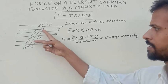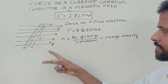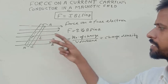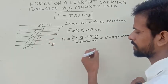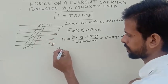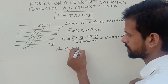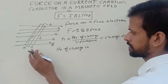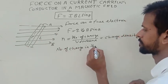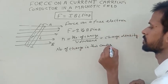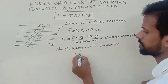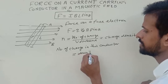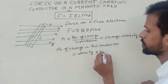If N is the charge density, then what will be the number of electrons, number of charge in this conductor? So we write, number of charge in this conductor is equal to density times volume.